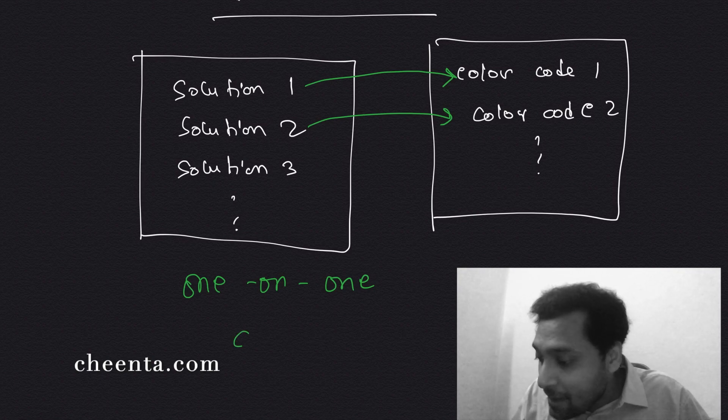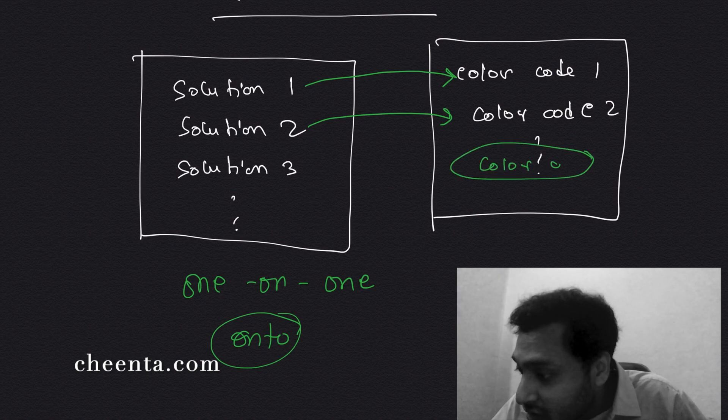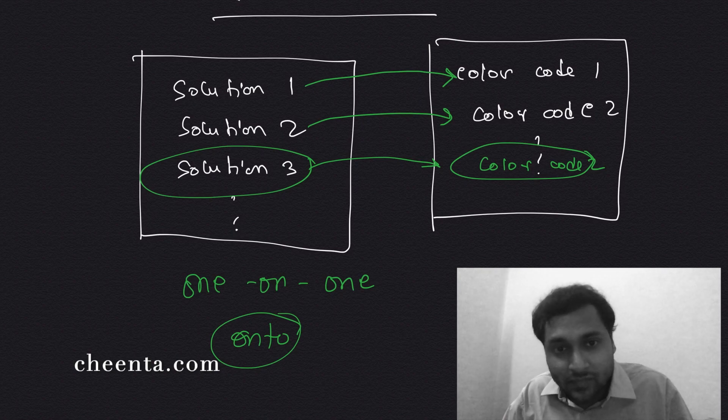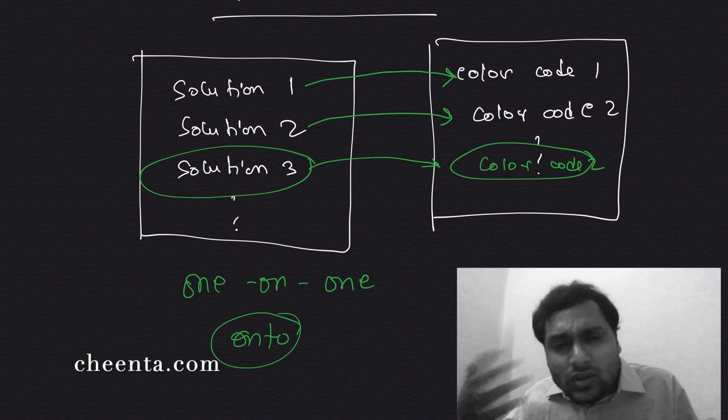And the mapping is also onto. What do I mean by onto? For each color code, there is some solution on the left-hand side corresponding to that color code. So in the Cheenta Combinatorics program for Maths Olympiad and ISI entrance, we talk in more detail about this sort of idea, bijection principle.